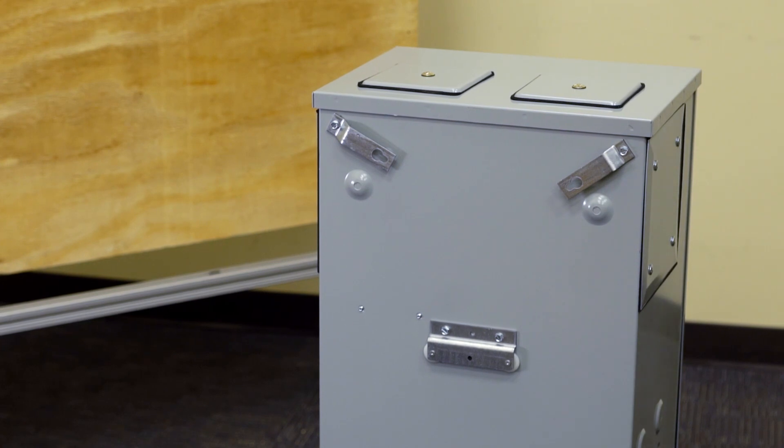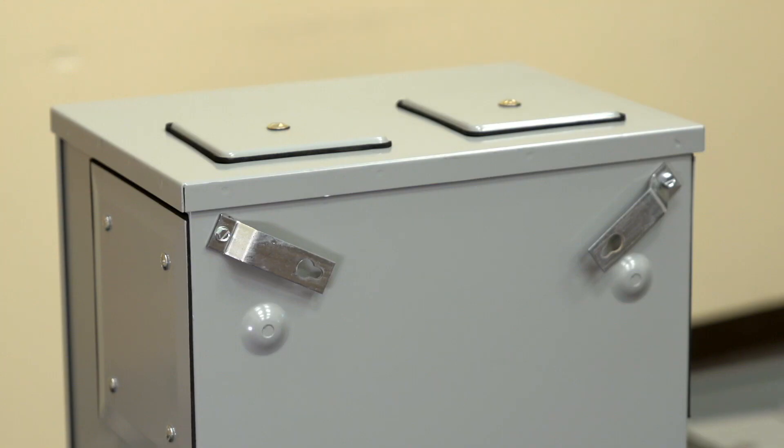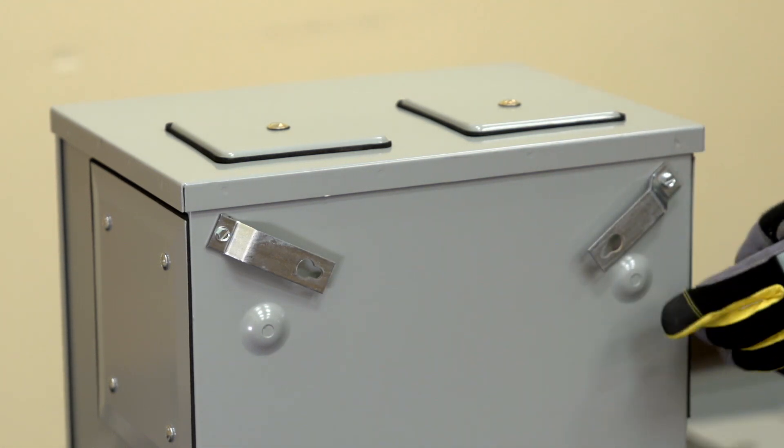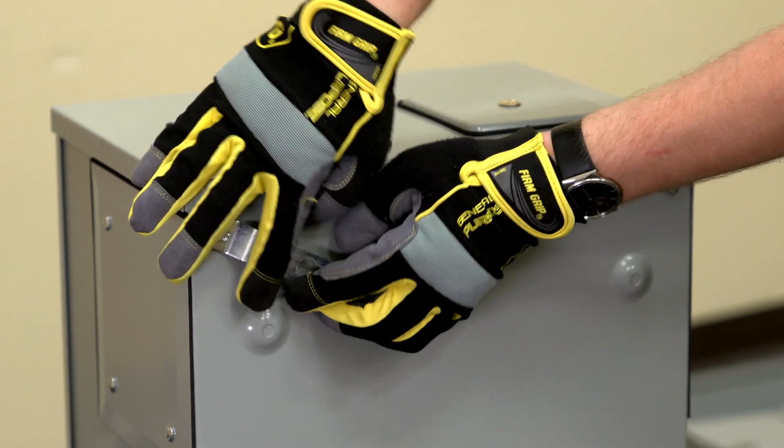Additional attachment points are available for added connection rigidity to the wall or adjacent modules. If these optional attachment points will be used, then the small knockouts must be removed prior to mounting the enclosure. However, using these points is not required. Now, swing the mounting tabs to the outward position.